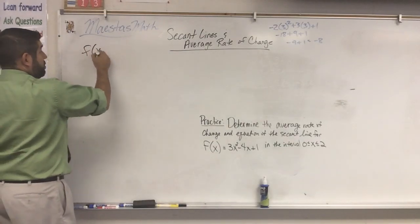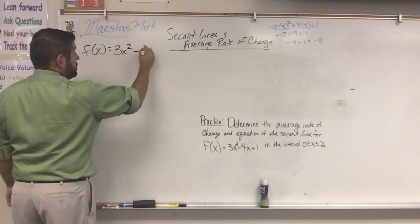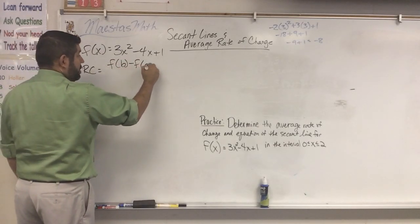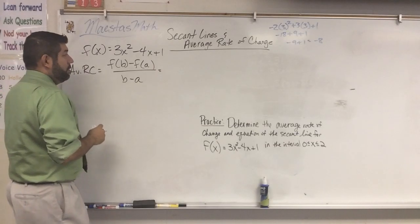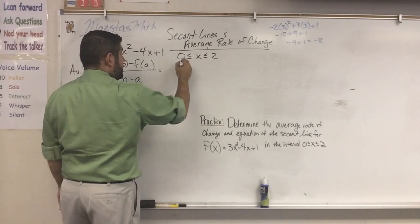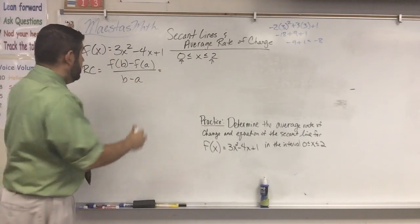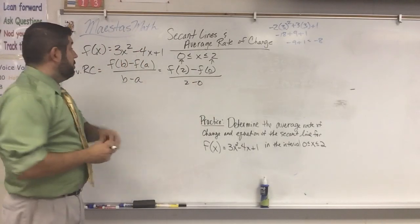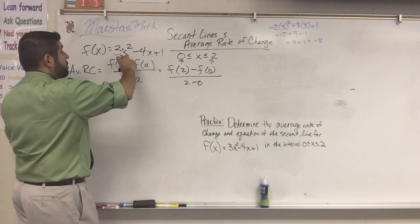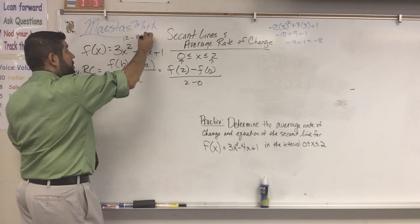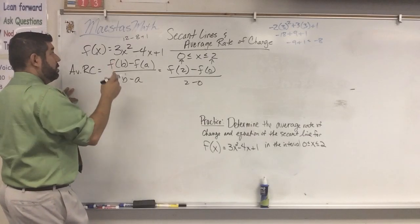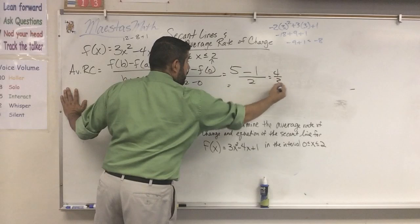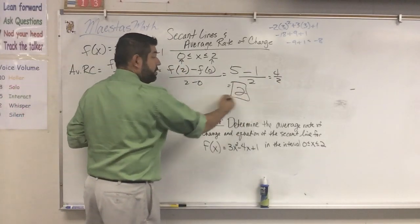We have the function three x squared minus four x plus one, and I want to first find the average rate of change. The average rate of change is f of b minus f of a over b minus a. We're going between zero and two, so a is zero and b is two. Plugging in: f of two gives us three times four minus eight plus one, which is twelve minus eight plus one, equals five. F of zero gives us one. So we have five minus one over two, which gives us a slope — an average rate of change — of two.